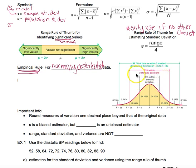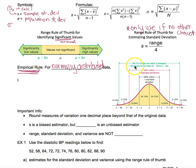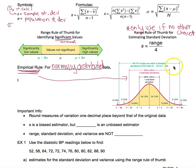When we have normally distributed data, the empirical rule states: 68% of that data should fall within one standard deviation of the mean; 95% of the data should fall within two standard deviations of the mean; and 99.7% of the data would fall within three standard deviations.